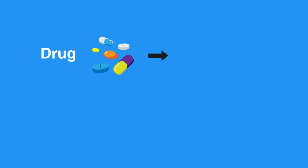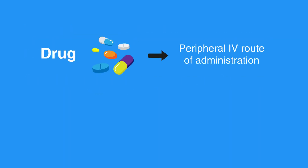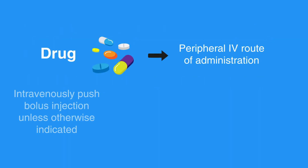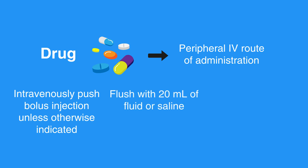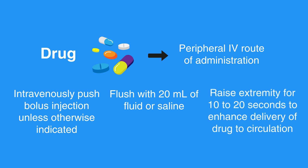If a drug is given via peripheral route of administration, then you should intravenously push bolus injection unless otherwise indicated. Flush with 20 milliliters of fluid or saline and raise the extremity for 10 to 20 seconds to enhance the delivery of the drug to circulation.